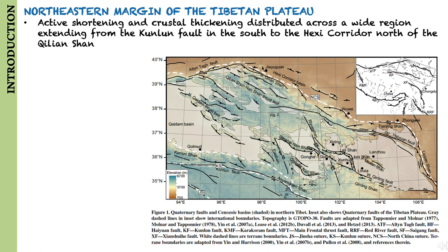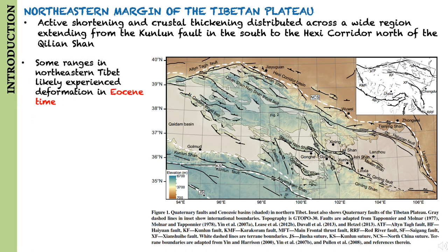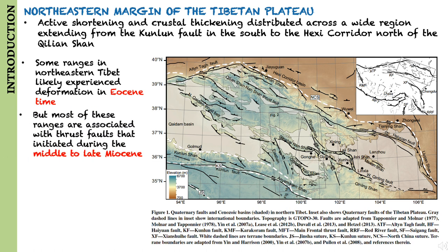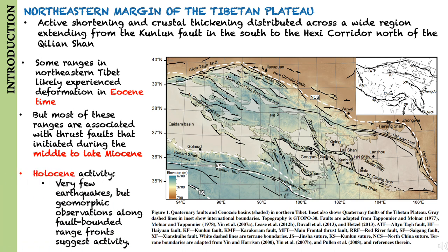Although some ranges in northeastern Tibet likely experienced deformation in Eocene time, widespread exposures of Neogene-Quaternary basin fill suggest that most of these ranges are associated with thrust faults that initiated during the middle to late Miocene. Geomorphic observations along fault-bounded range fronts indicate that many have been active during the Holocene, although only few of these fault networks have experienced instrumental earthquakes.